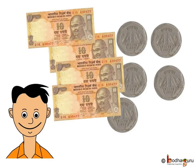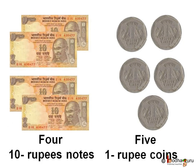Look, how much money Aman has in his piggy bank. He has few 10 rupee notes and few 1 rupee coins. How much did he save till now? See, he has 4 ten rupee notes and 5 one rupee coins.